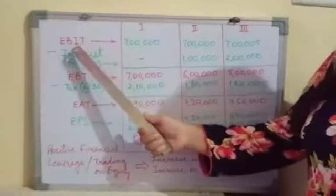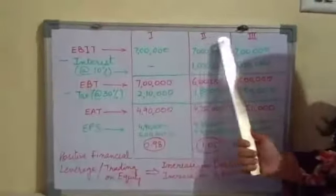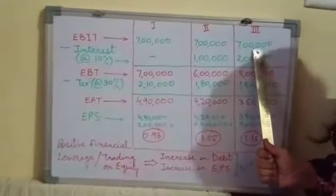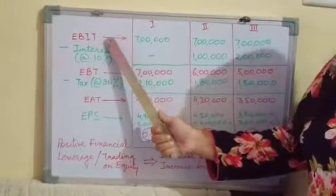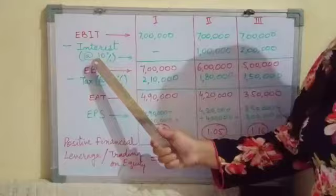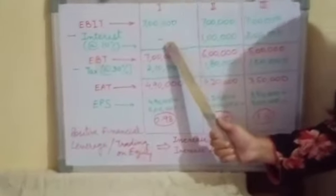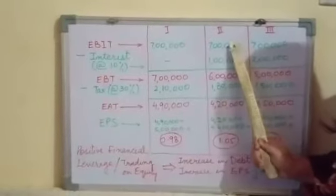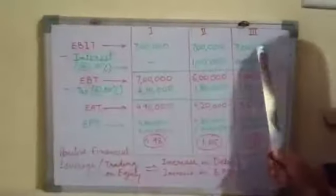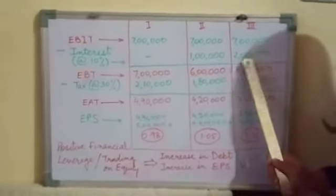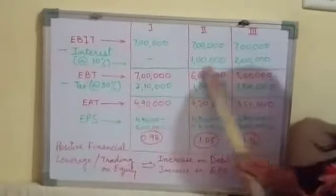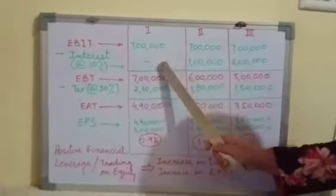As per this example, earnings before interest and taxes (EBIT) is 7 lakhs in all three situations. We first reduce the interest: since the amount of loan was nil in situation 1, no interest is paid. In situation 2, the loan is 10 lakhs at 10%, so interest is 1 lakh. In situation 3, the loan is 20 lakhs at 10%, so interest is 2 lakhs. This interest is deducted from EBIT.